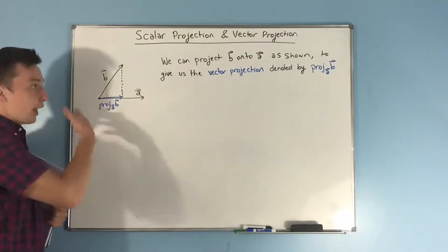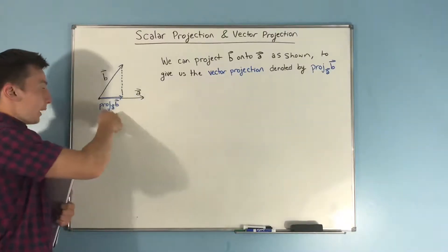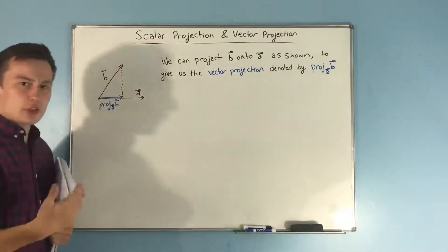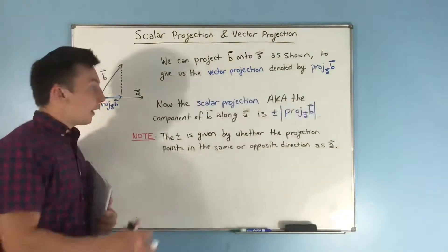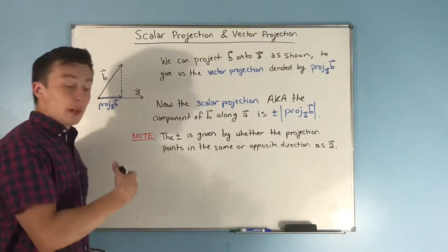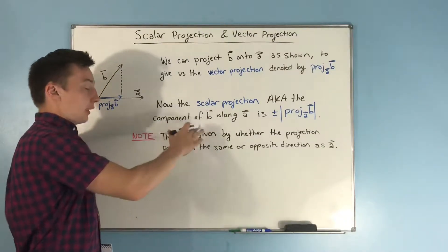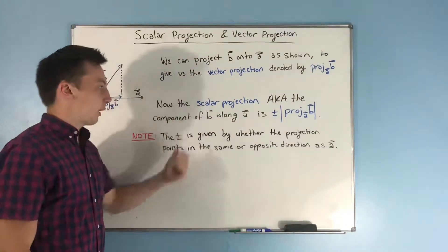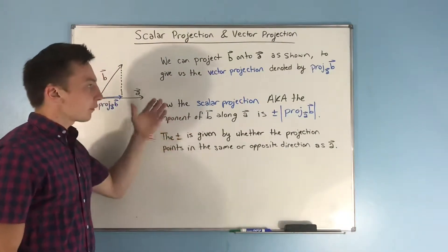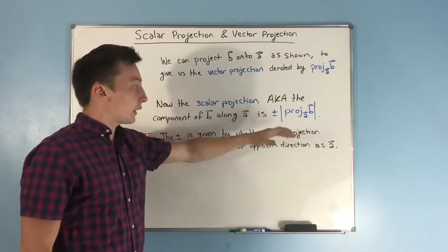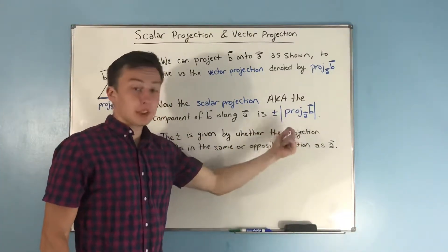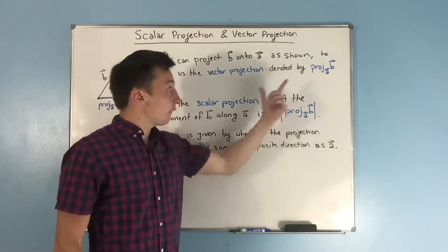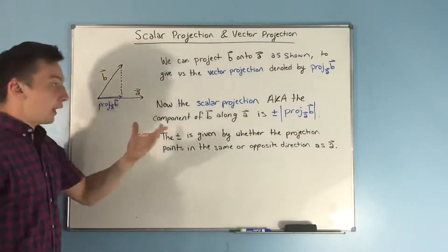As far as this notation goes, you can remember that it's the projection of B onto A — B is going on top of A. Now on to the scalar projection. This is also known as the component of B along A. You'll see a formula in a second and that'll make sense why I'm mentioning this. The scalar projection is basically plus or minus the magnitude of the projection of B onto A. Now the projection of B onto A is a vector — it's a vector projection.